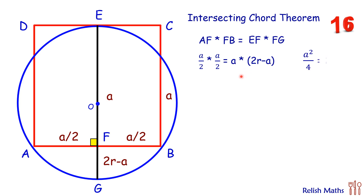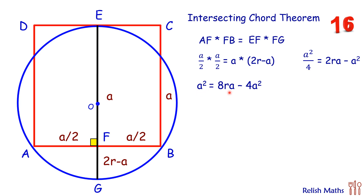Solving this, we get A²/4 = 2RA minus A². Multiplying both sides by 4 and taking the A² terms to one side, A cancels on both sides and we get R in terms of A. So R equals 5/8 A.